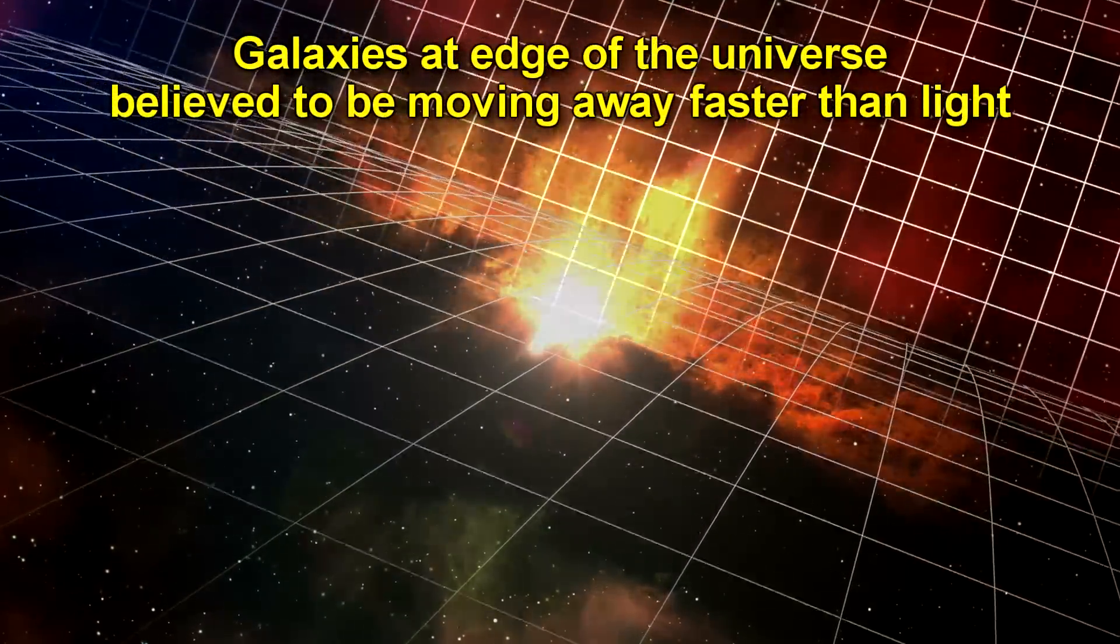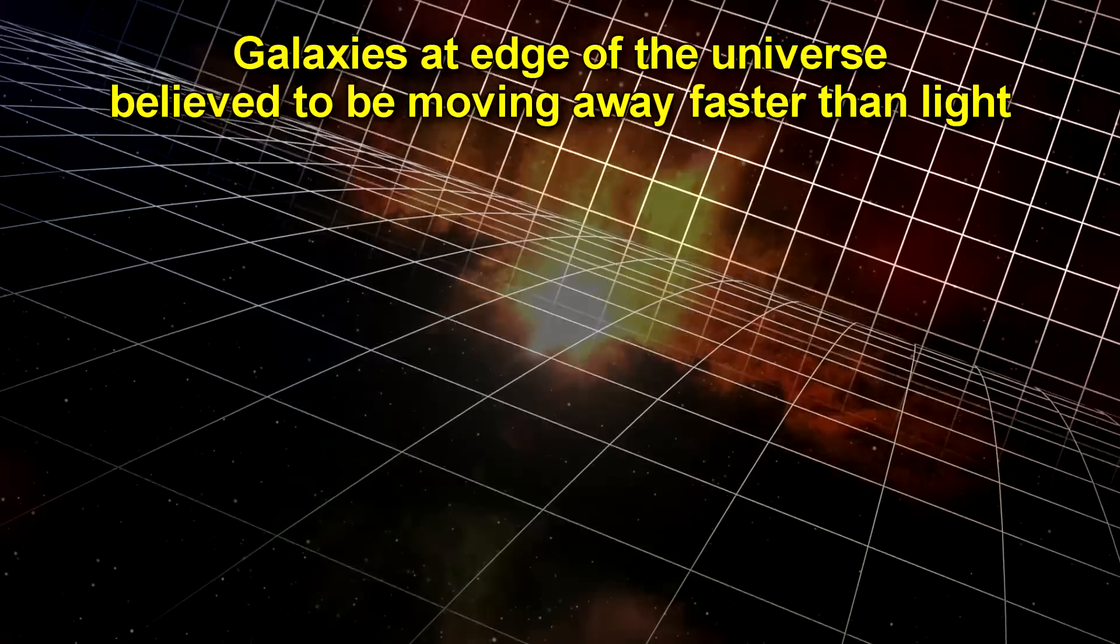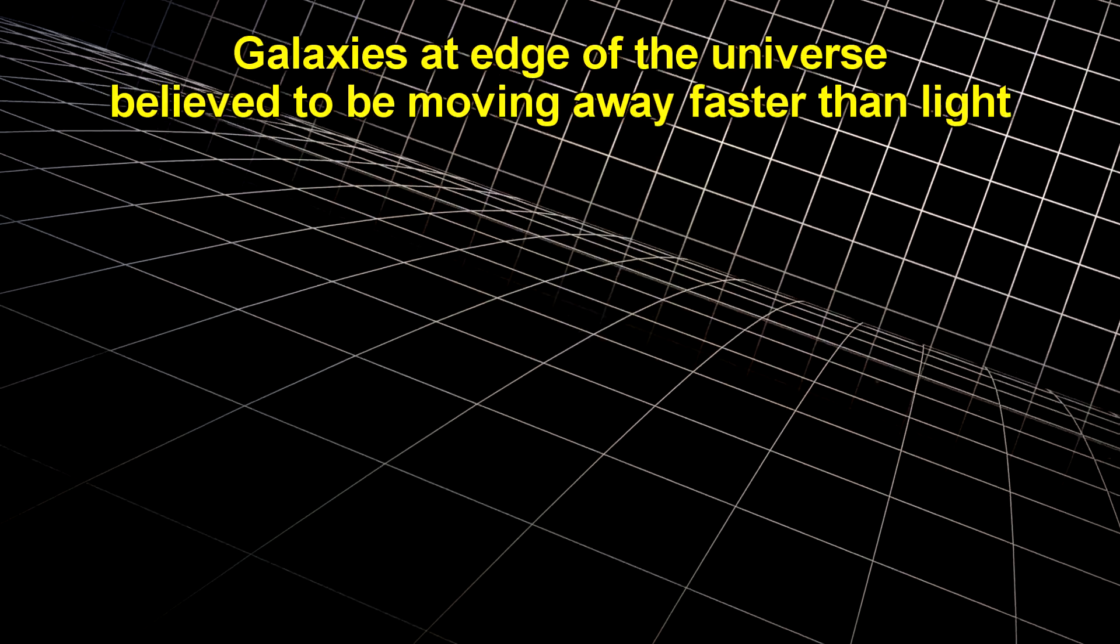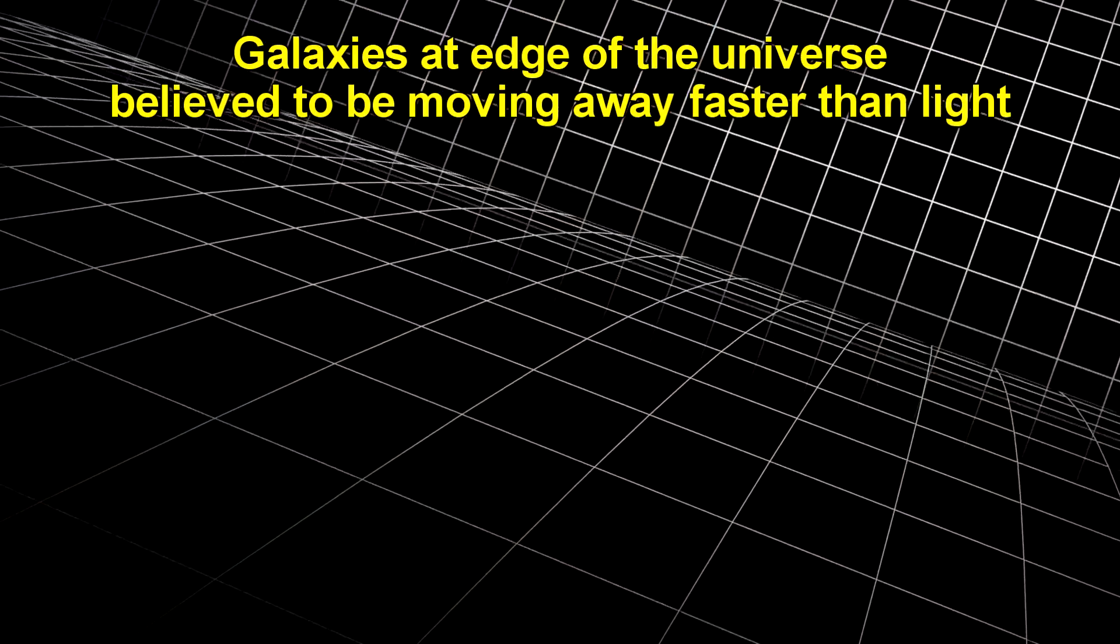Alcubierre figured out a geometry that would fold space in such a way that a ship would not move in its frame of reference, but the space that it was resting on would travel. But can space really move at faster than light speed? Our observations seem to indeed confirm this. For example, the space very far away from us at the edge of the universe is moving faster than the speed of light. Any light from galaxies or stars in this space is light that we will never see.